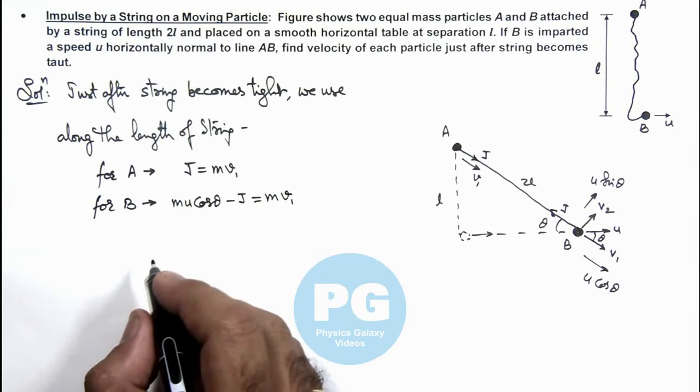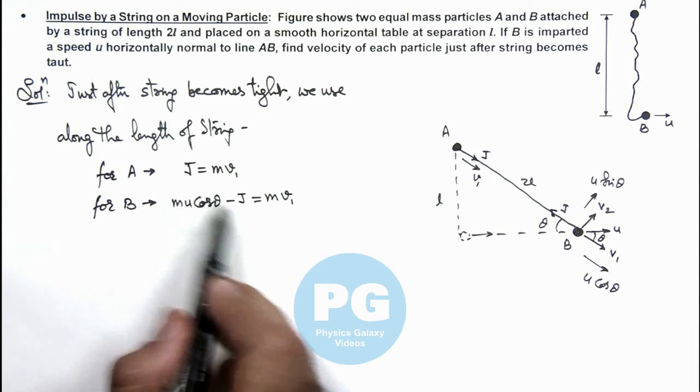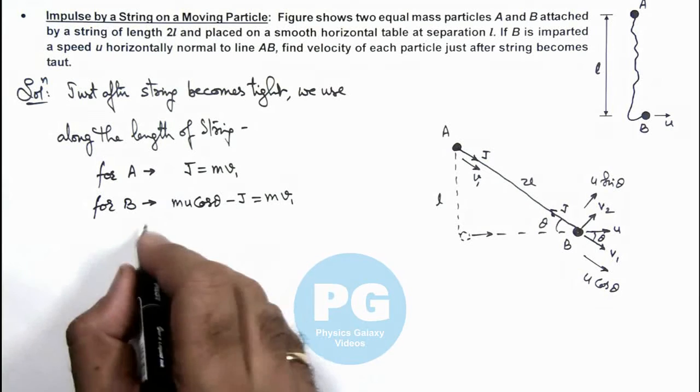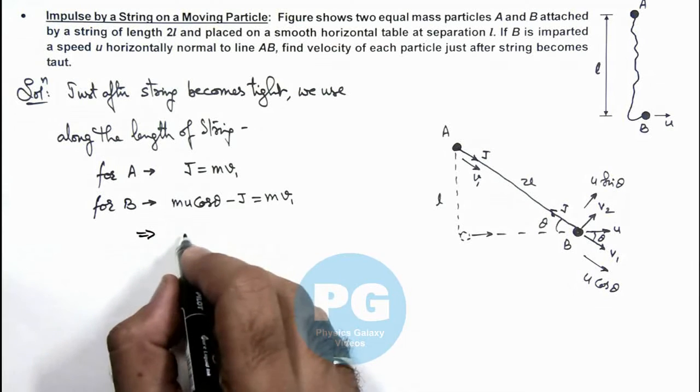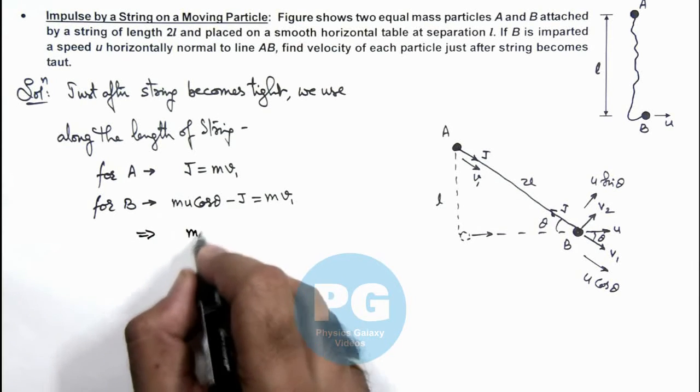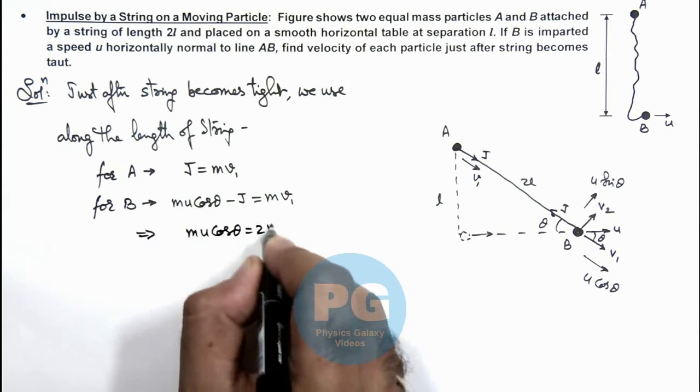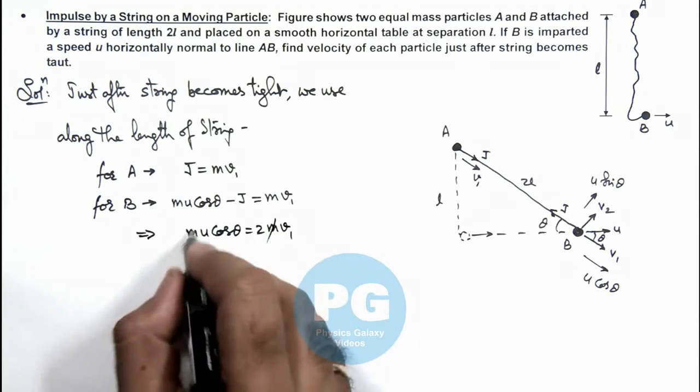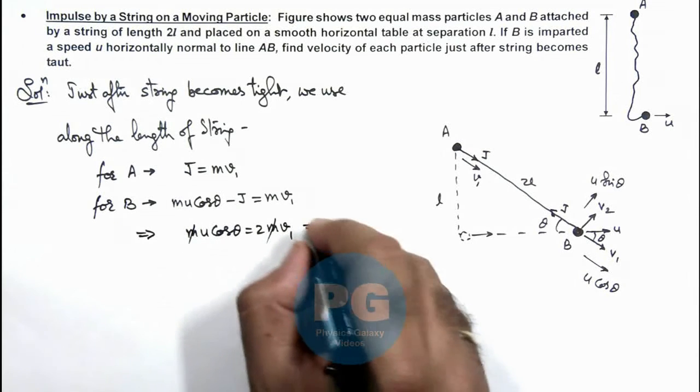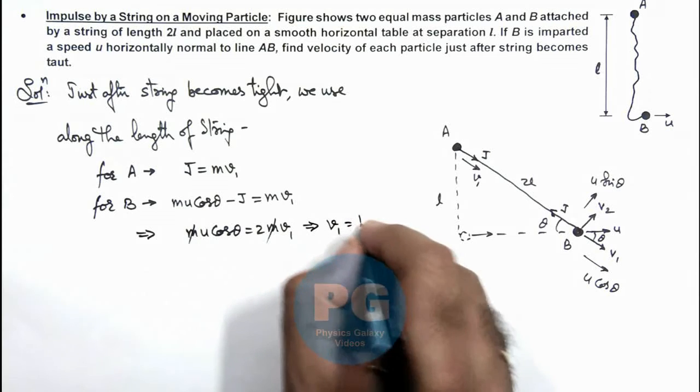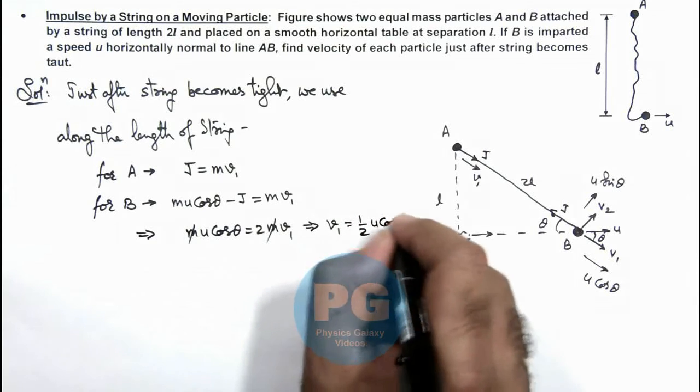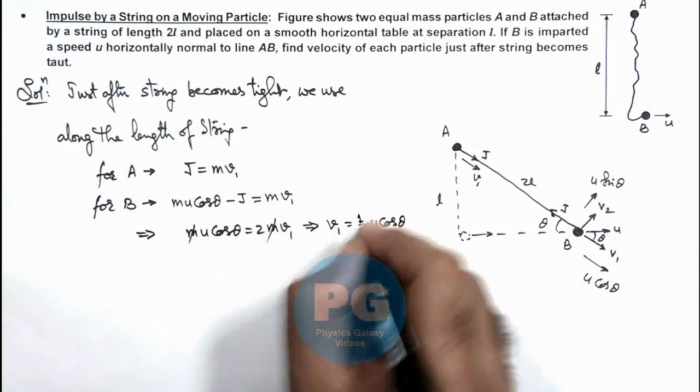From here you can see if we substitute the value of J over here, this equation results mu cos theta is equal to 2mv1, where m gets cancelled out. This will result the value of v1 which is half u cos theta.